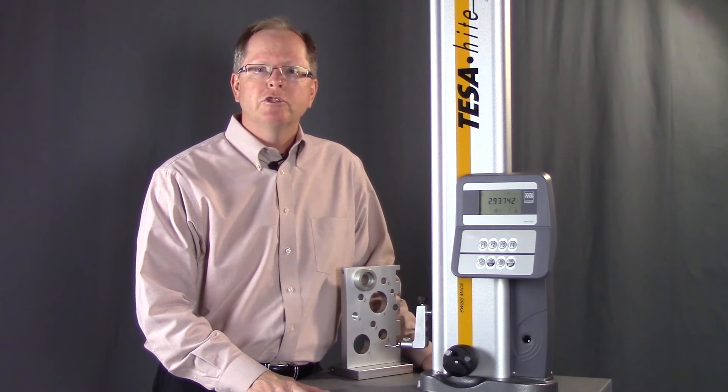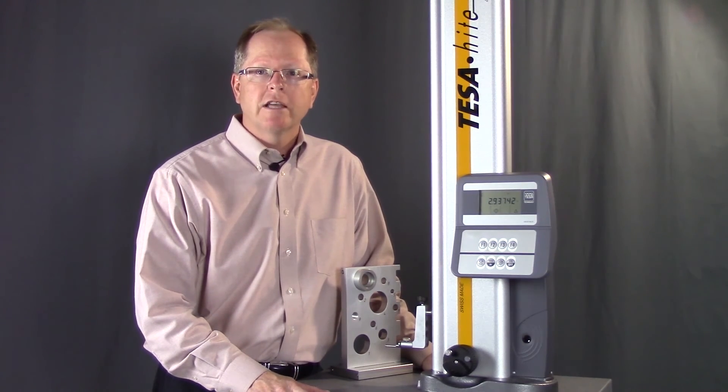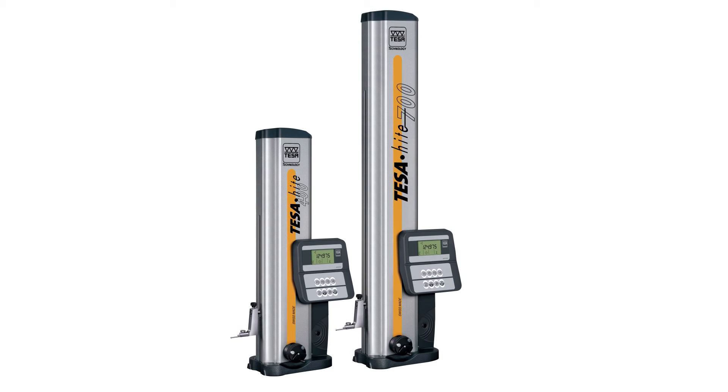Tasa height electronic height gauges come in two sizes. The smaller size has a measuring range of 16 inches or 415 millimeters. The larger size has a measuring range of 28 inches or 715 millimeters.